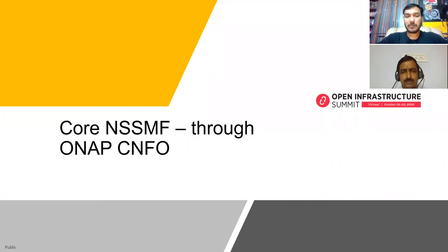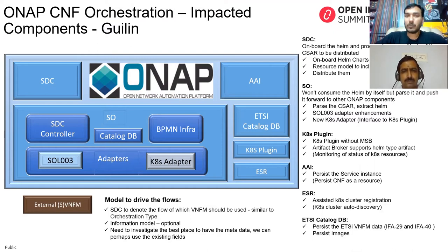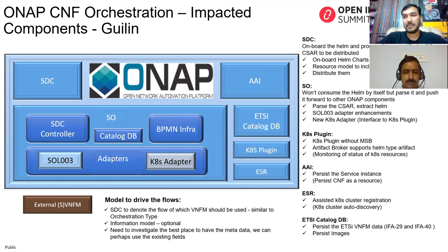In Frankfurt we started the slicing journey with core only; in Guilin we took a further leap. There was also a parallel CNFO — container function orchestration — requirement in ONAP, which we wanted to combine to showcase a heterogeneous service with all three resource types: CNFs, PNFs, and VNFs. The core part is what we wanted to showcase using the CNF orchestration.